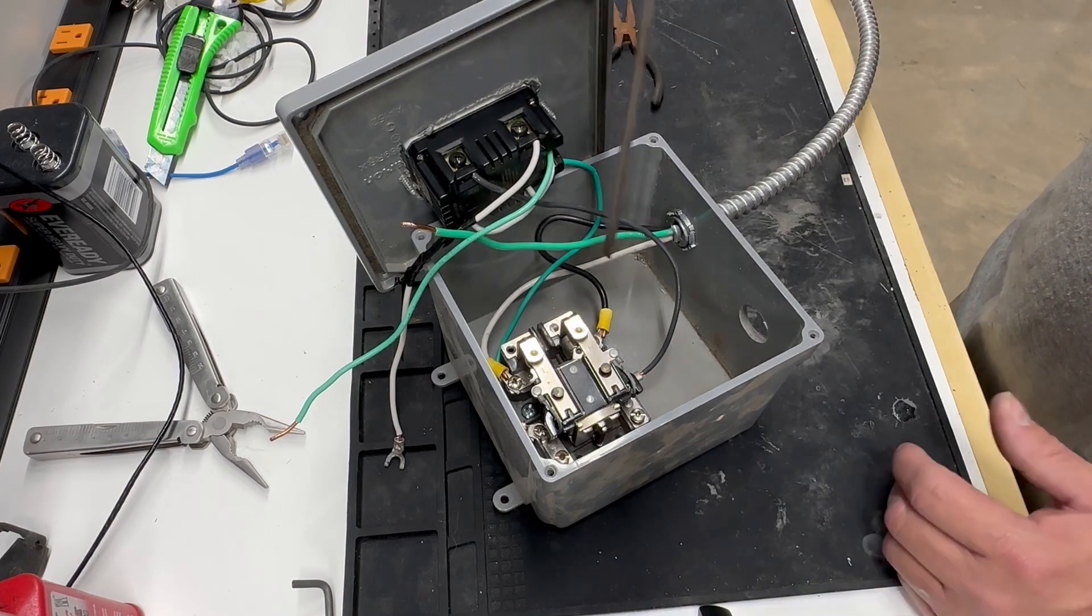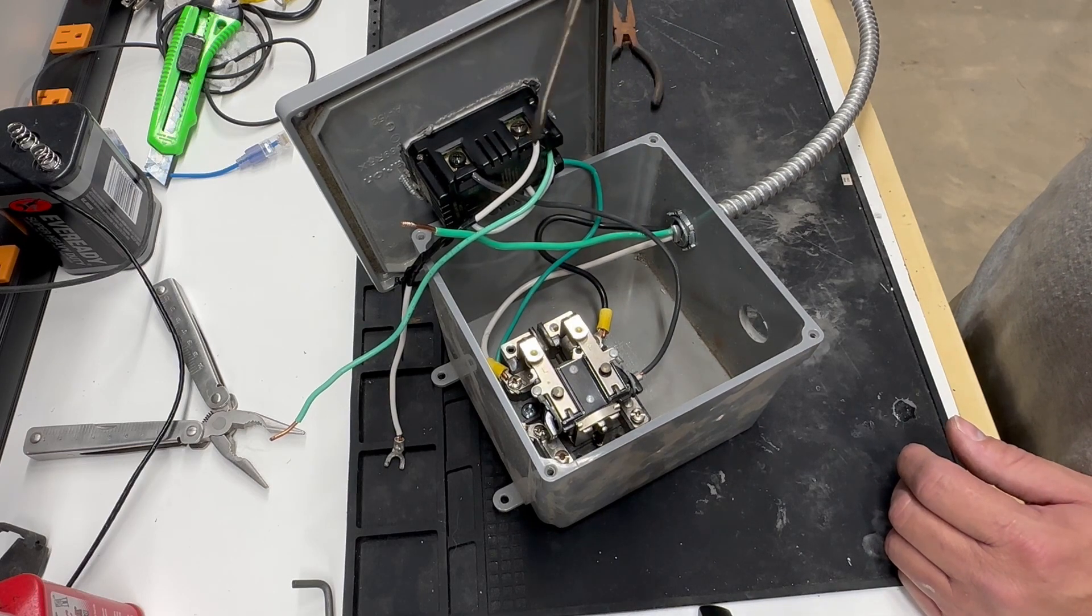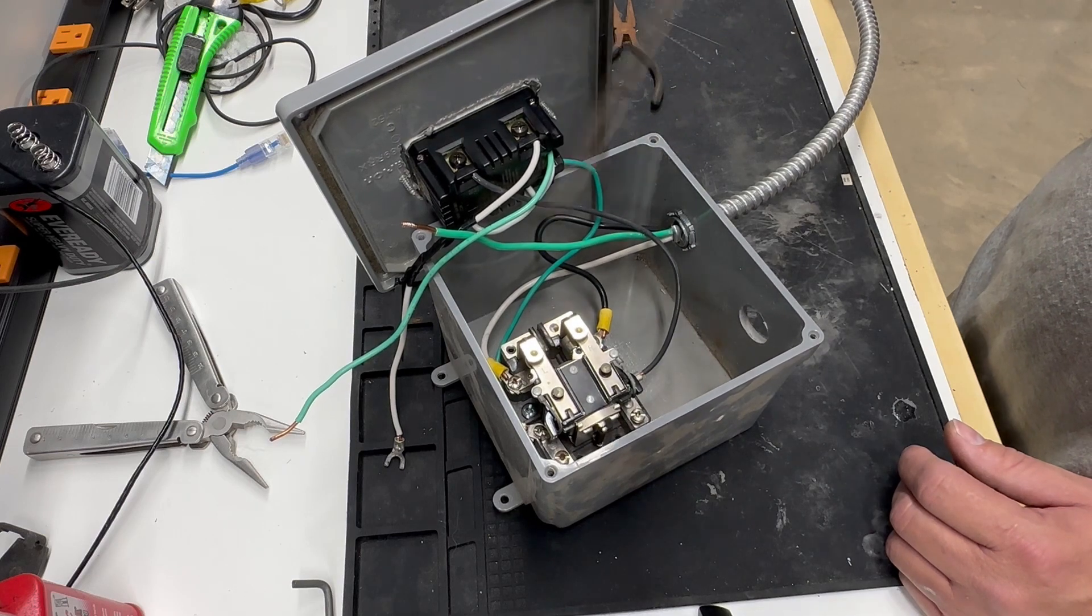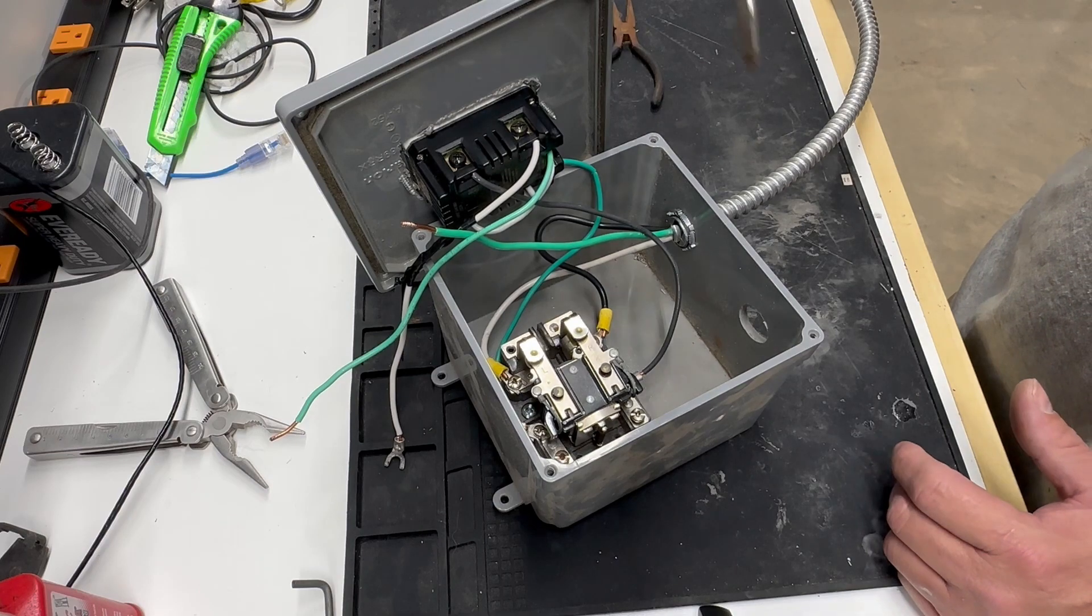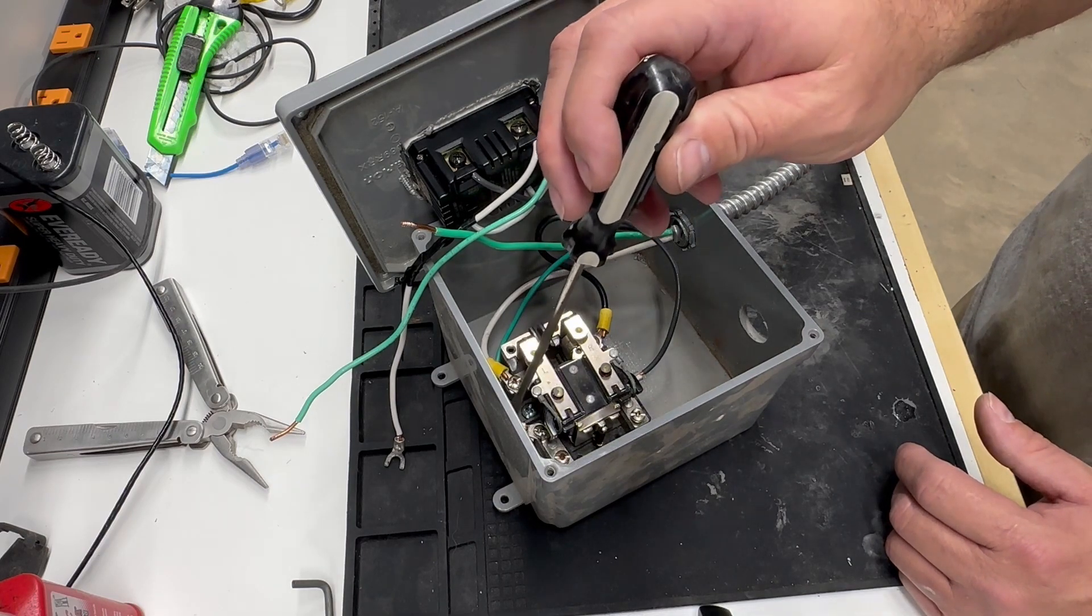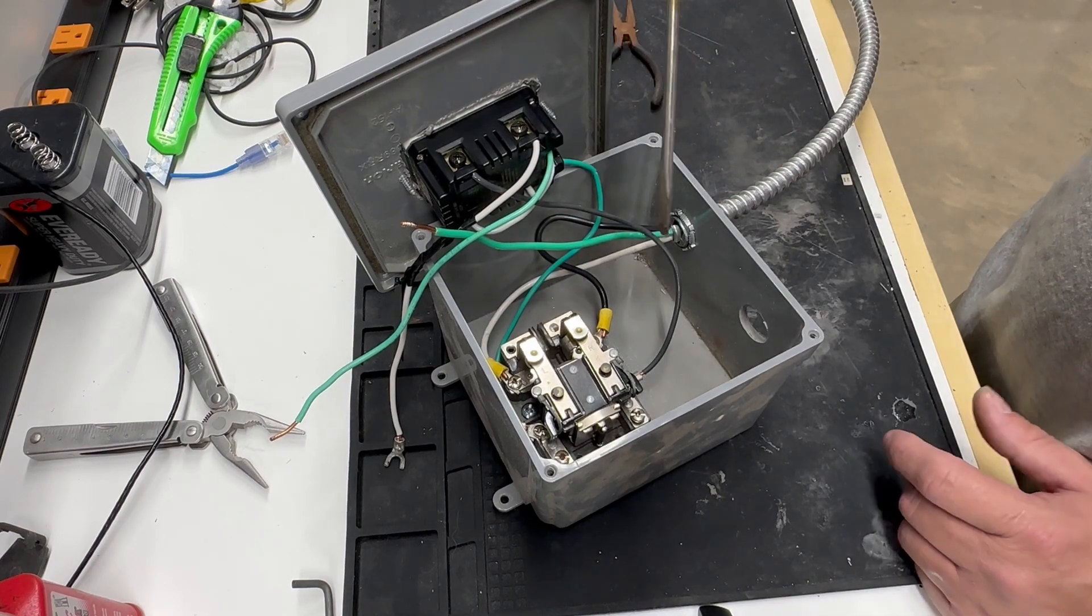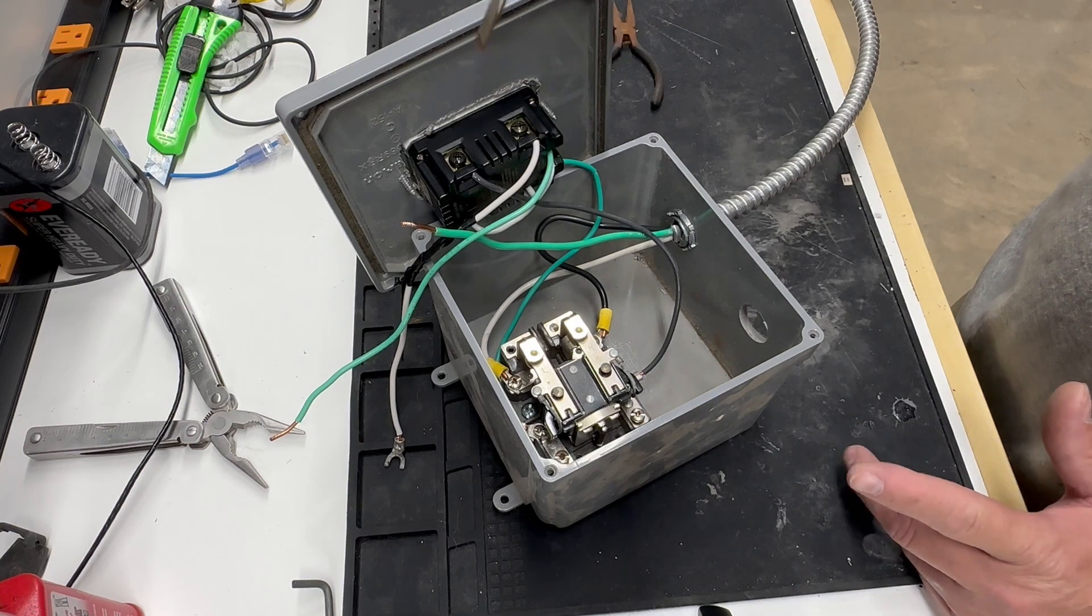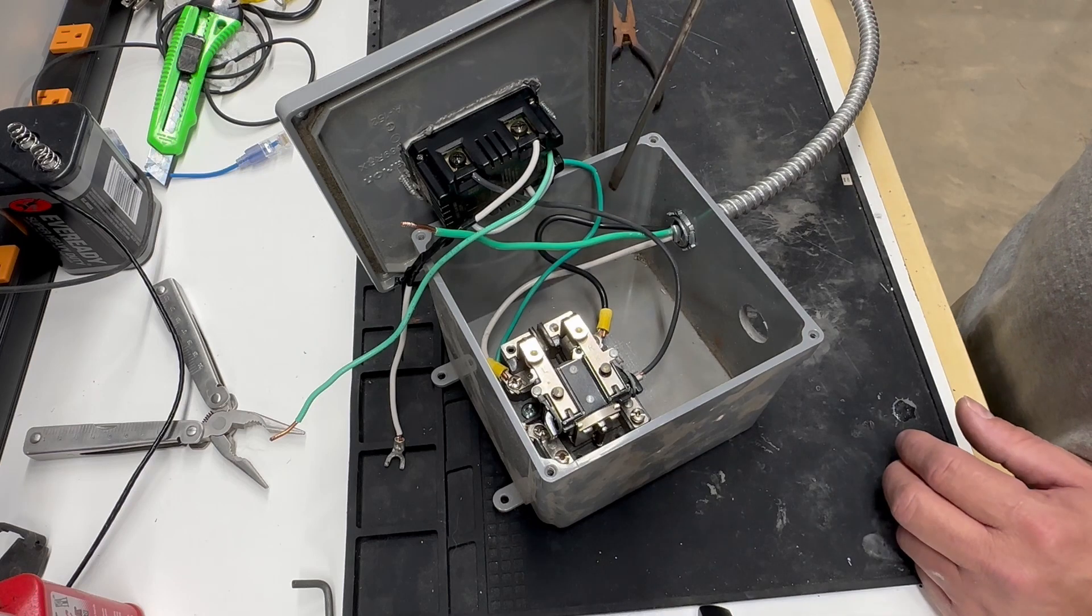To energize this relay, in a normal situation, the way this timer works is you have your neutral and you have your hot and then the hot is what's switched. Since this is 220 and I don't have a neutral ran to mine, I'm just using the ground on the opposing side. Technically the ground and the neutral have the same potential.